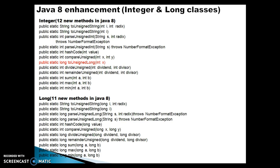Now I would like to discuss the new method enhancements in Java 8 in the Integer as well as Long classes. The Integer class has been enhanced with 12 new methods in Java 8, and the Long class, which is also a wrapper class, has been enhanced with 11 new methods. One method highlighted in red is not available in the Long class, but the remaining 11 methods are available in both classes and are almost synonymous. These methods are static, so you can call them directly by class name.